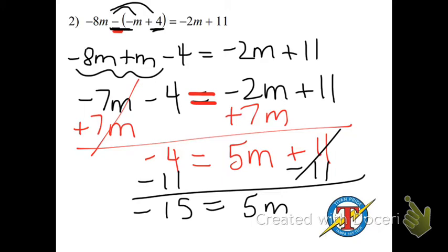Divide by 5. Divide by 5. And final answer, m equals negative 3.